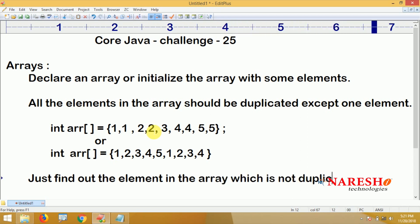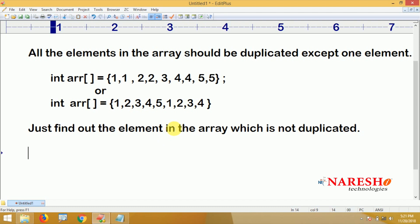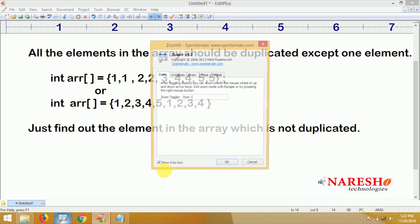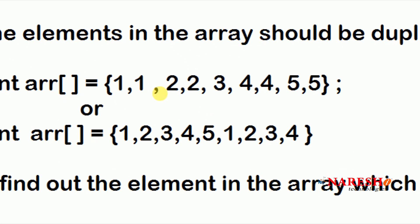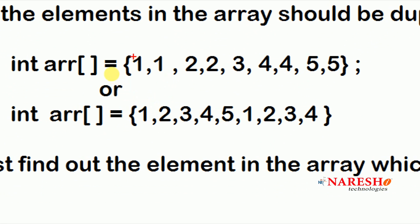With the help of a for loop, first take one array. Consider the index element, compare with the next element. Whenever you find the duplicate, stop finding that element. Next, go to that next index element and start from the beginning again.